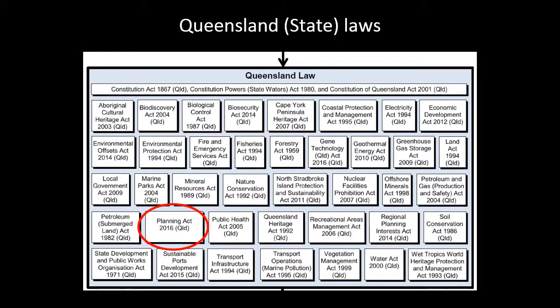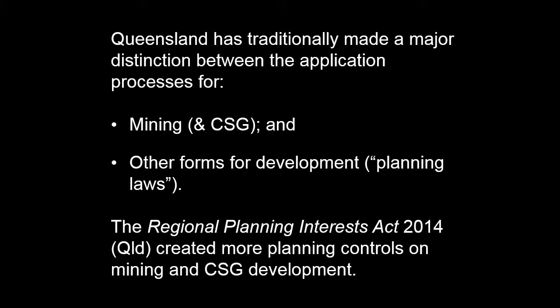Coming down to the state level, there are a whole heap of laws, but particularly circled there is the Planning Act. Queensland has traditionally made a major distinction between the application and regulatory systems for mining — including coal seam gas and petroleum — and everything else. The resource sector got a lot of favouritism, easier processes, and wasn't subject to local government control. Whereas under the planning system, it's pretty well everything else. The Regional Planning Interests Act 2014 has blurred the distinction somewhat by putting planning controls over resource projects, but that traditional distinction is actually quite fundamental.